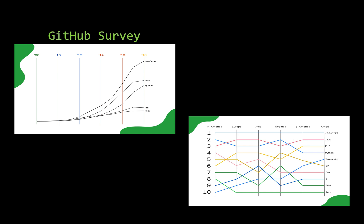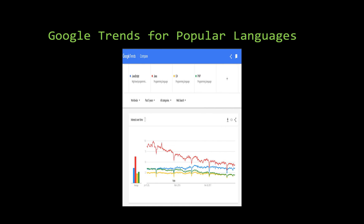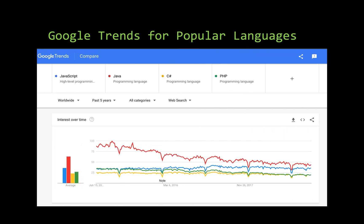This is the result of the GitHub survey. If you check JavaScript on Google Trends, you can see the difference — JavaScript is clearly dominant. This is the history of JavaScript.